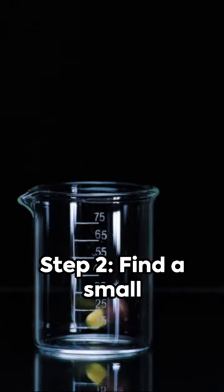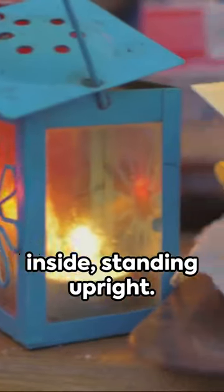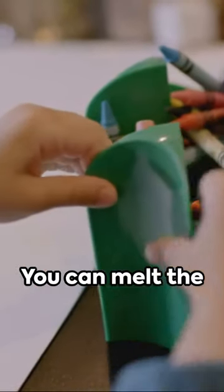Step 2. Find a small metal container, like an empty tuna or corn can. Place the crayon inside, standing upright. You can melt the bottom of the candle and stick it to the inside of the empty can.